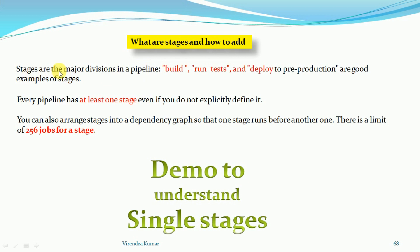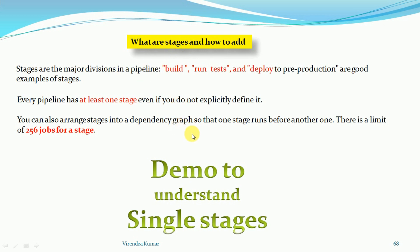Stages play a major role in the pipeline before production. Now every pipeline has at least one stage. If you are going to create a pipeline you need to define at least one stage. If you are not going to define one stage then by default it will have one stage - that we will see. Under one stage you can create at least 250 jobs or a maximum of 256 jobs we can define.